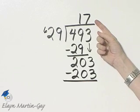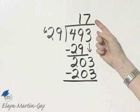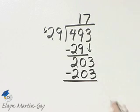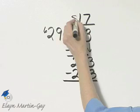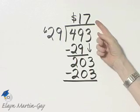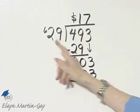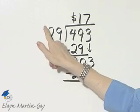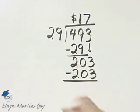The price of each can of paint costs $17. And how can you check? Multiply 17 times 29, and you should have that total price of $493.